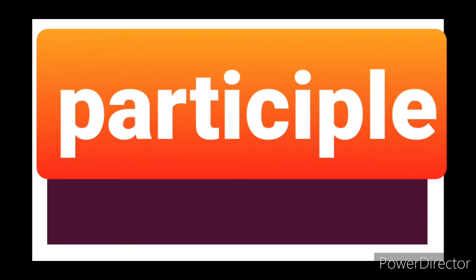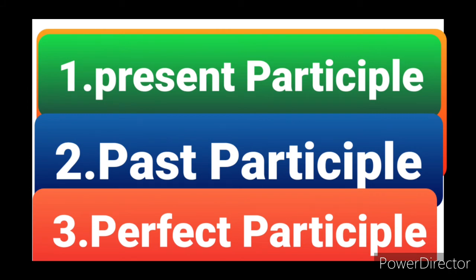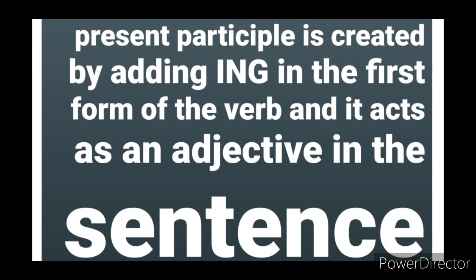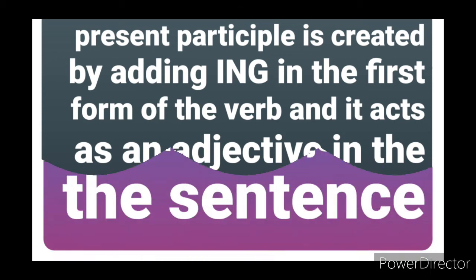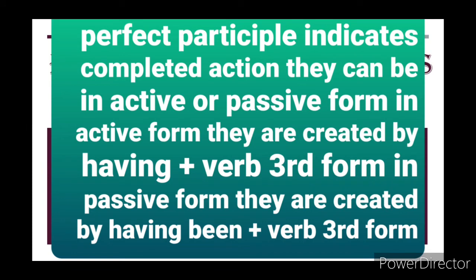Now let us understand the participle. Participles are basically divided into three parts: present participle, past participle, and perfect participle. Present participle is created by adding '-ing' to the verb's first form and it functions as an adjective. Past participle is created by using the verb's third form and it also functions as an adjective. Perfect participle indicates completed action and can be in active or passive form. In active form, it is created by 'having' plus the verb's third form. In passive form, it is created by 'having been' plus the verb's third form.